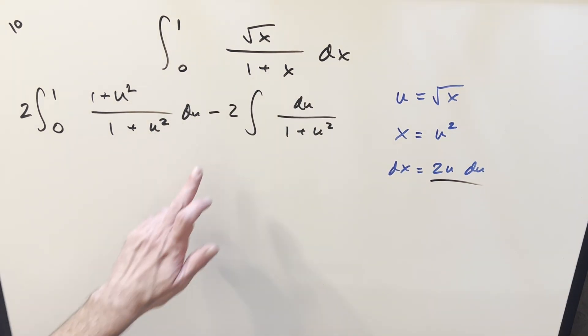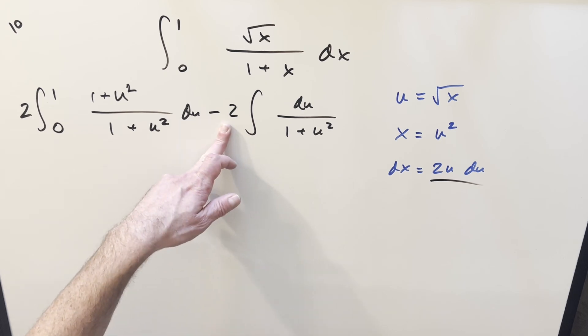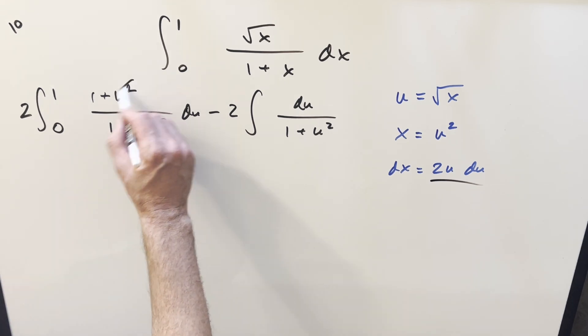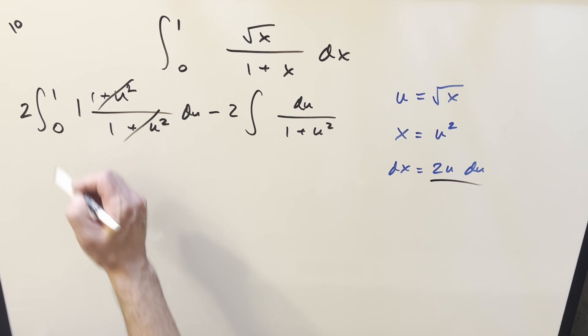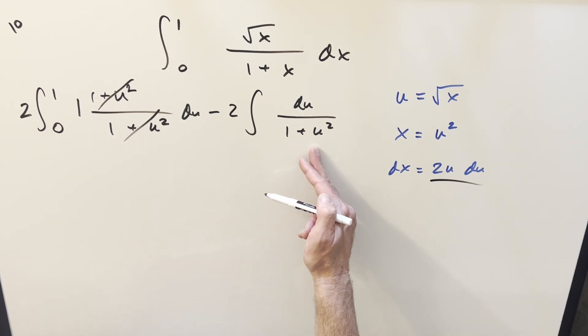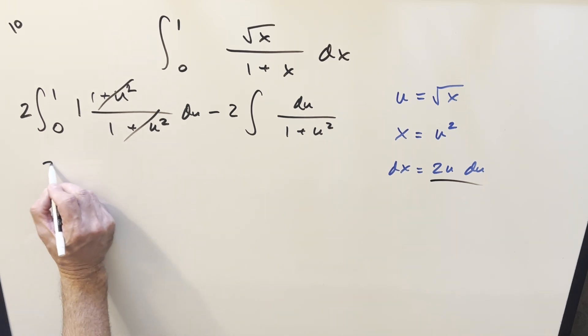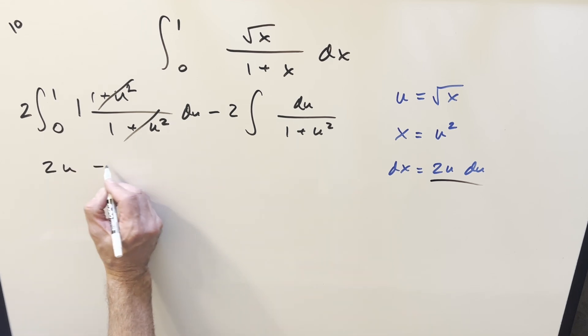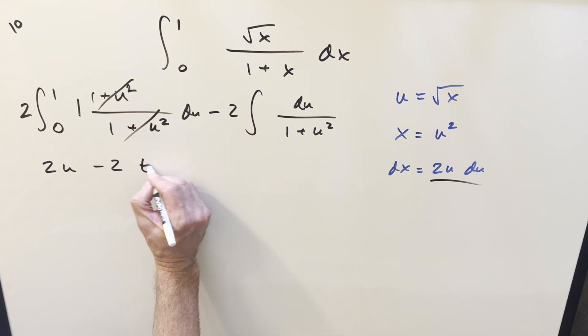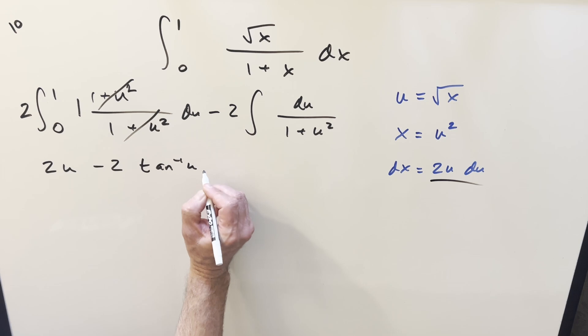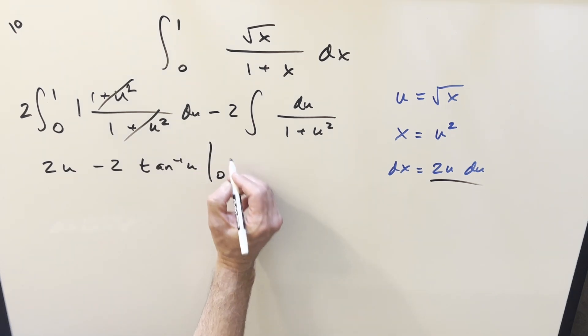Okay, now just distributing the minus 1 to the 2 in front, we get this minus 2 over here. But now we're going to have two easy integrals. This is going to cancel with this, so we're just integrating 1. This here is going to be our arc tan integral. So let's do this really quick. We have 2u. I'm going to put them back together again. So we're going to have minus 2. This is going to be just arc tan of u. Then evaluating everything all together, we'll just evaluate from 0 to 1.